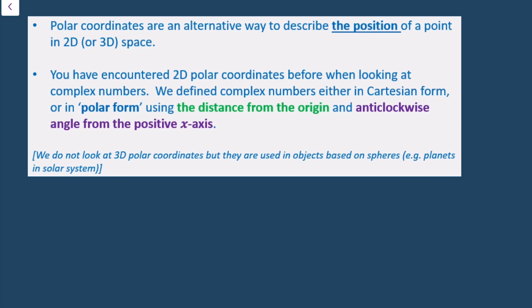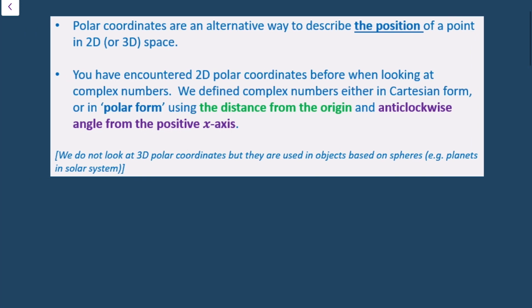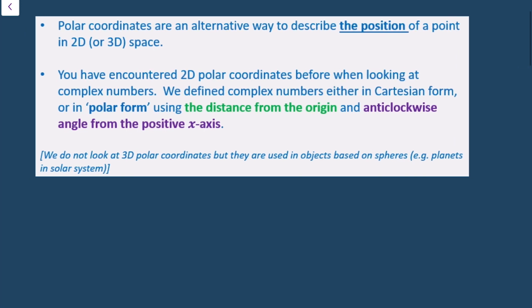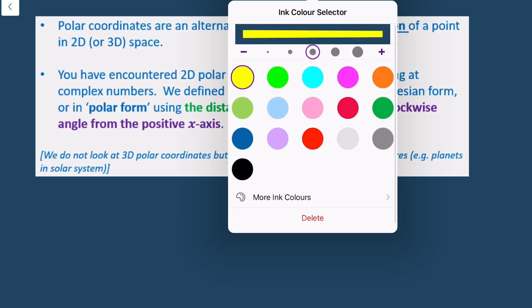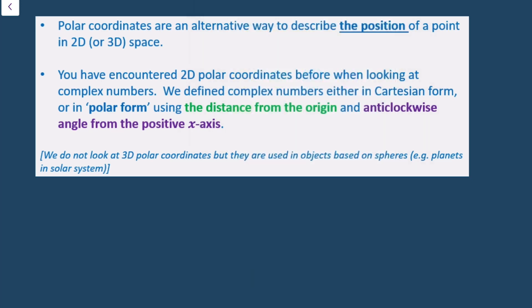Polar coordinates are an alternative way to describe the position of a point in 2D or 3D space. We've encountered this before when we looked at complex numbers, because we defined complex numbers either in Cartesian form or in polar form.